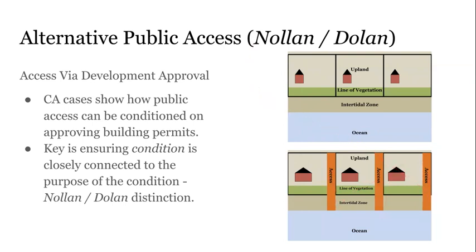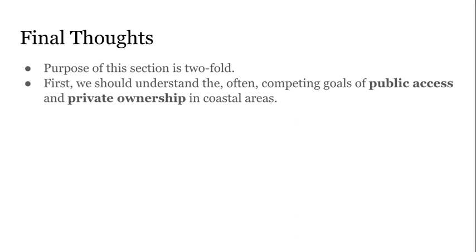As a matter of final thoughts, the purpose of this section is twofold. First, we should understand the often competing goals of public access and private ownership in coastal areas — that in the United States, there are fundamentally competing goals between ensuring public access and legitimizing and incentivizing private coastal ownership, including the relationship between those private values and local government revenue.